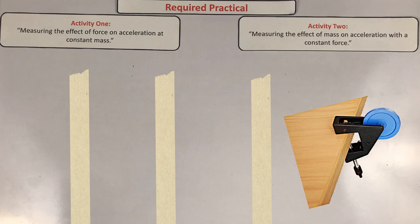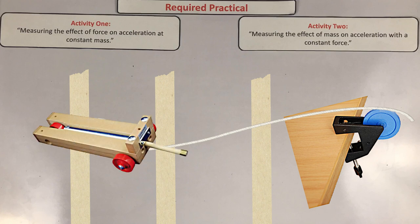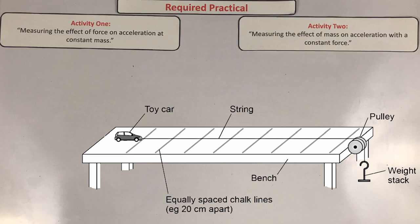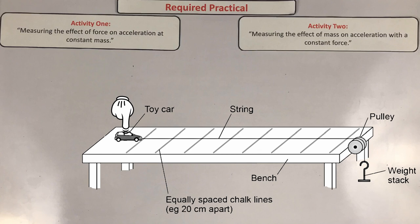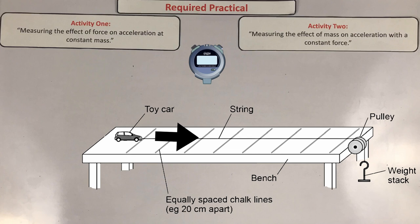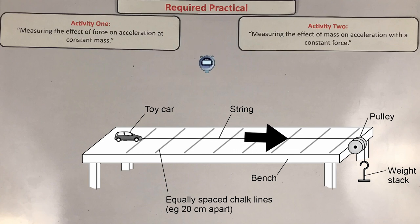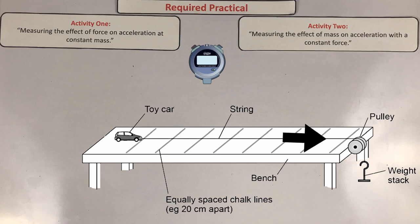Tie a length of string to a car or trolley, pass the string over the pulley, and attach it to a weight stack. Make sure the string is horizontal and in line with the car or trolley. Hold the car at the start point, attach the full weight stack (one newton), then release the car at the same time as you press the stopwatch in lap mode to measure the time to cross each distance. Record your results in a table.